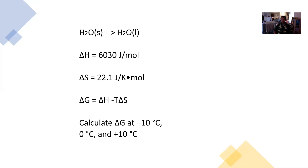So calculating delta G and interpreting what delta G means is a very important skill. This is the foundation — we know enthalpy, we've worked with entropy, and this formula for free energy is going to put everything together. This will be the foundation of everything else we see in chapter 17 on spontaneity.